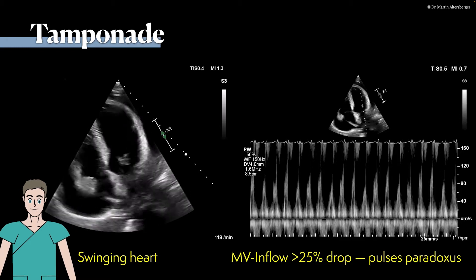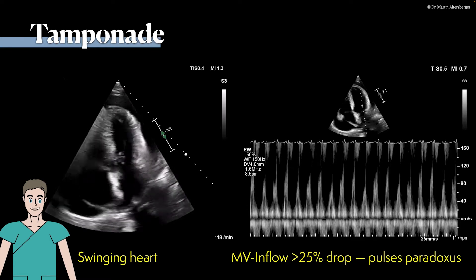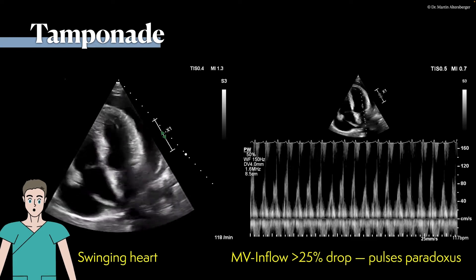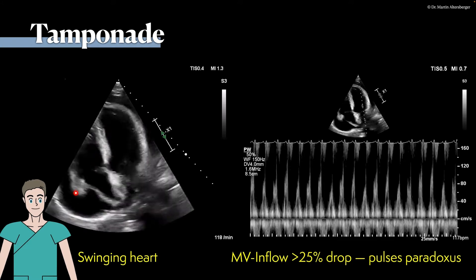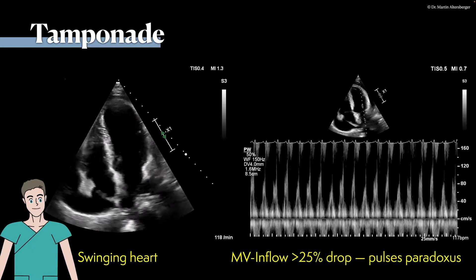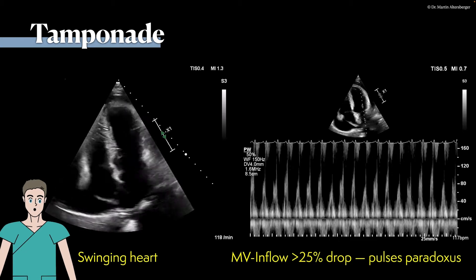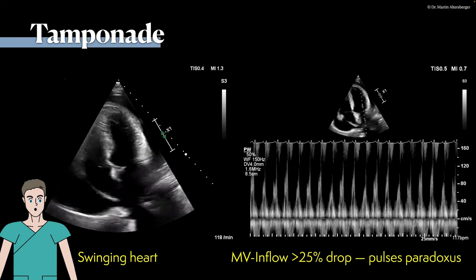The patient was hemodynamically unstable. We see that the right atrial walls are compressed, and partly the free wall of the right ventricle is also not able to fully dilate during diastole. Per definition in echocardiography, that defines tamponade. It was a very young patient with an oncological diagnosis. If you see a swinging heart and a dilated inferior vena cava, that is definitely a hemodynamically relevant pericardial effusion.